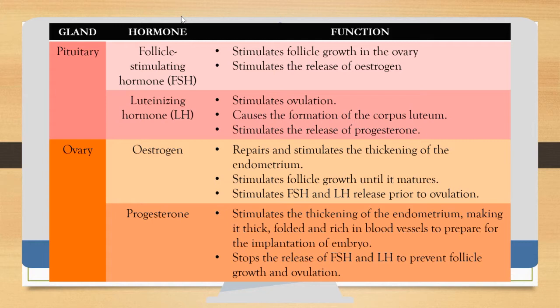Now let's look at the hormones involved in the menstrual cycle. There are four types of hormones you must memorize along with their functions. The first hormone is Follicle Stimulating Hormone (FSH), which is secreted by the pituitary gland — our master gland.